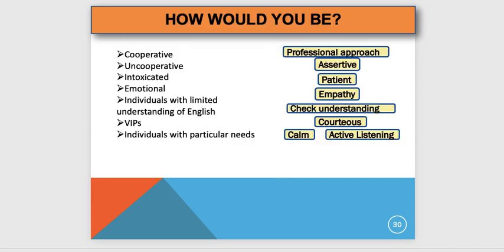For cooperative individuals, use a professional approach. For uncooperative ones, be assertive — not aggressive — state the rules and regulations clearly. For intoxicated people, be patient as it takes them longer to process. For individuals with limited English, check their understanding and show empathy. For individuals with particular needs — for example, someone in a wheelchair — get down to their level, make eye contact, and use active listening.